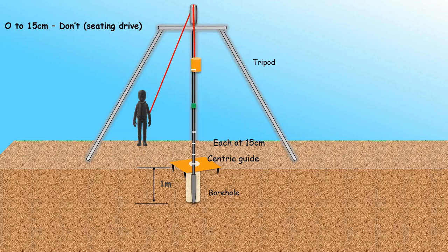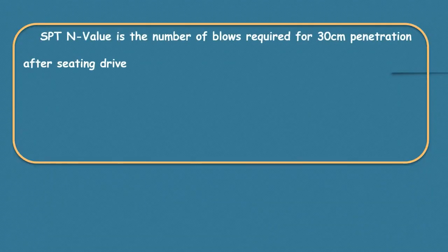Here, blows required for the first 15 centimeter penetration are not considered as it is a seating drive. Blows required for the second and third 15 centimeters, that is from 15 to 30 centimeters and from 30 to 45 centimeters, are recorded. So SPT N value is the number of blows required for 30 centimeter penetration after your seating drive.